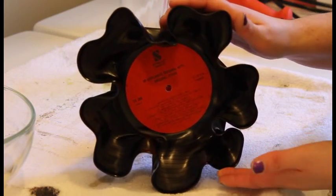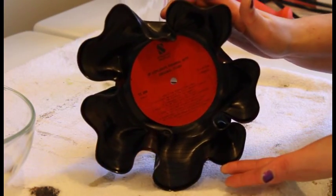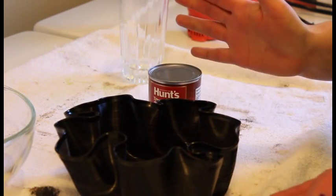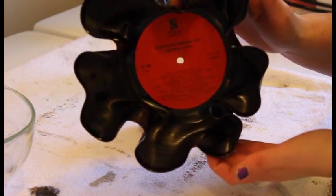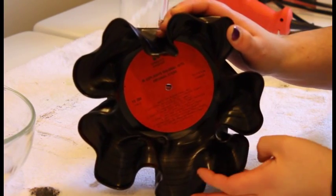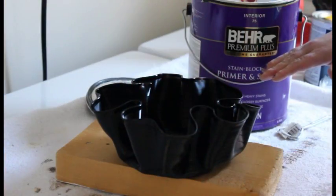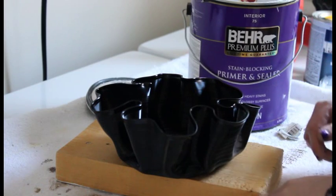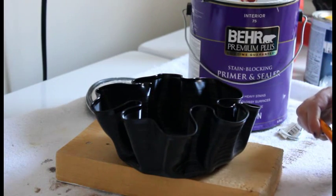I'm going to take it to the next level. You certainly could leave it like this and put it on a table and enjoy it and put your knickknacks in, but I am going to paint this and add inside decoration like an actual flower. I'll prime this first with one coat of my Behr stain blocking primer and sealer.